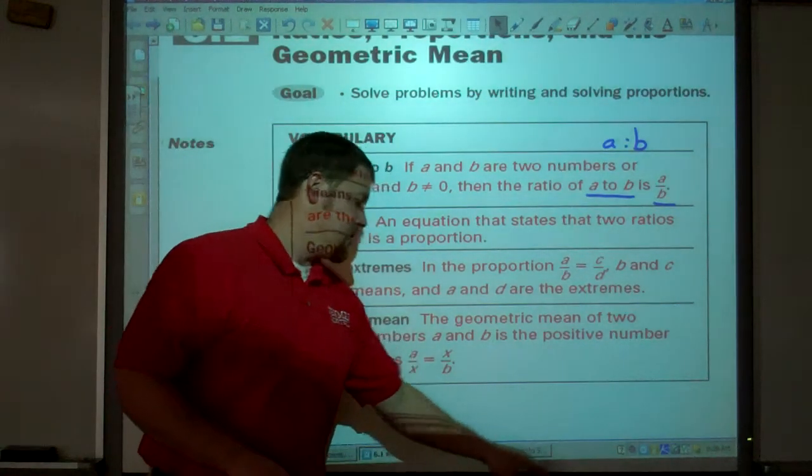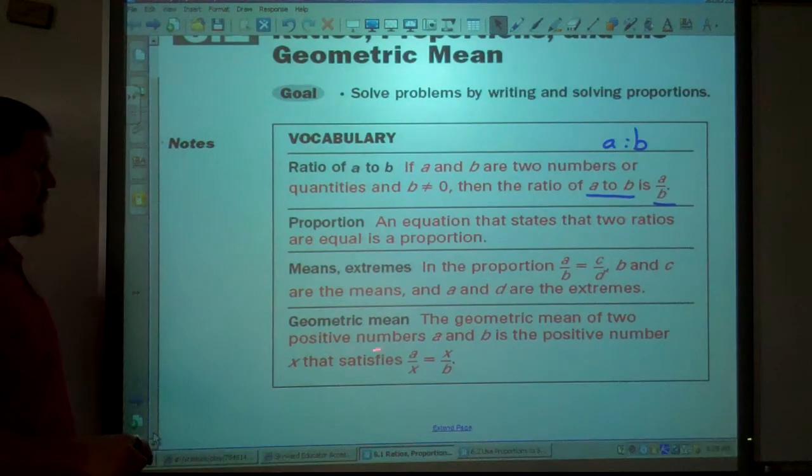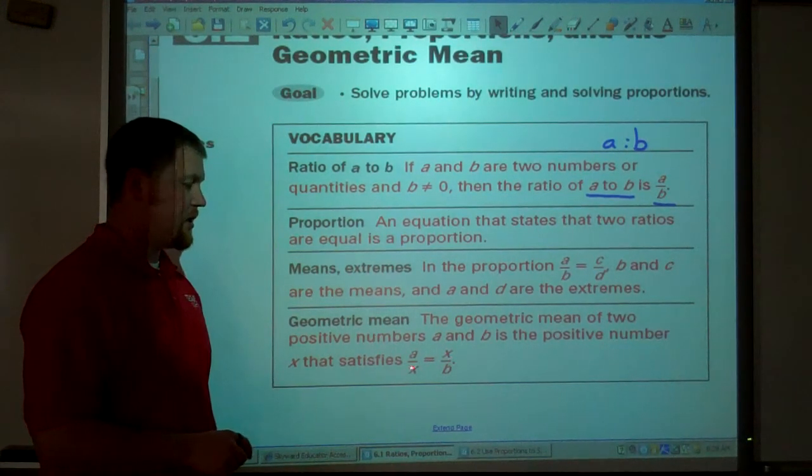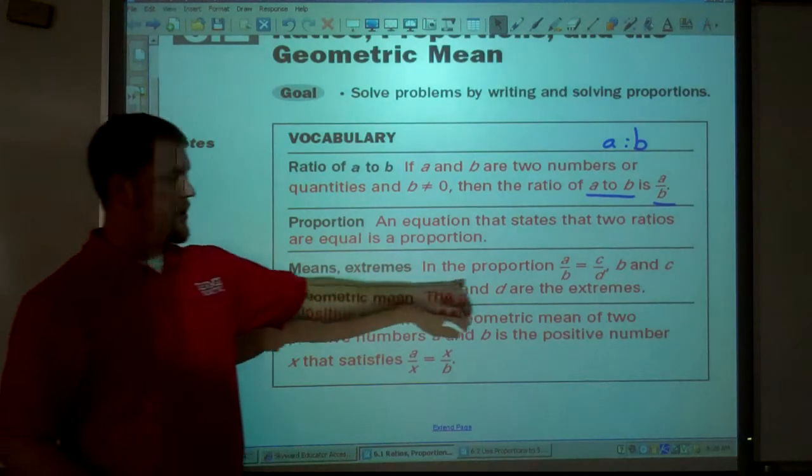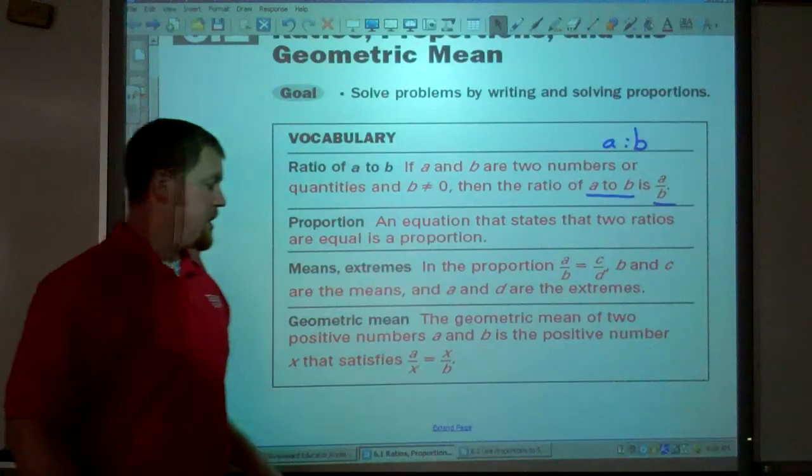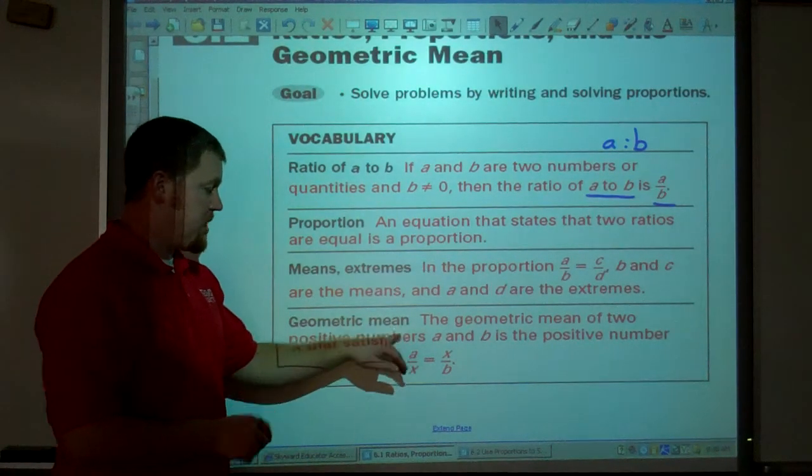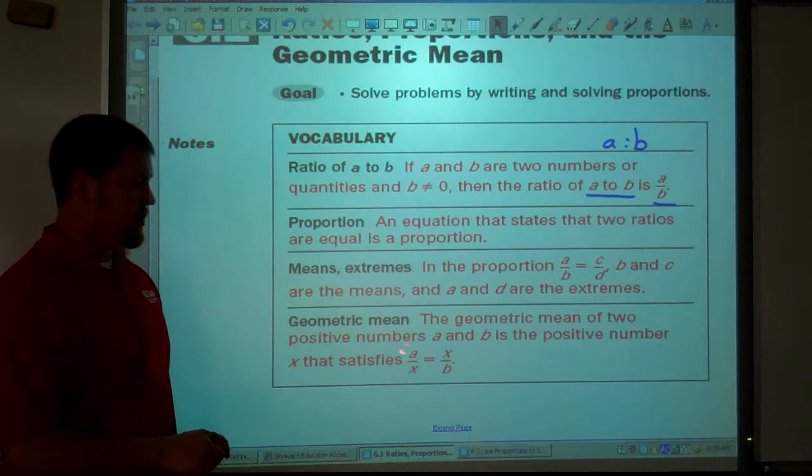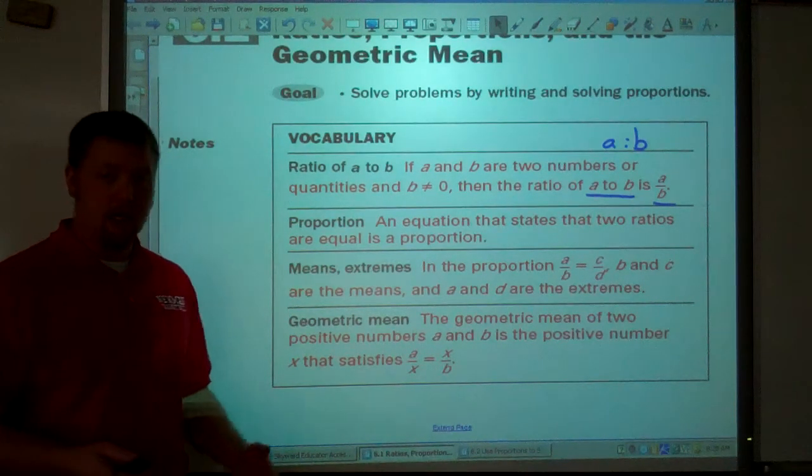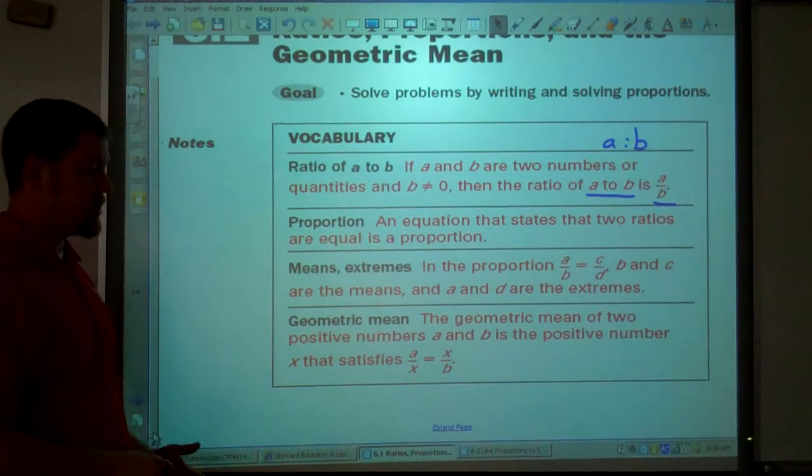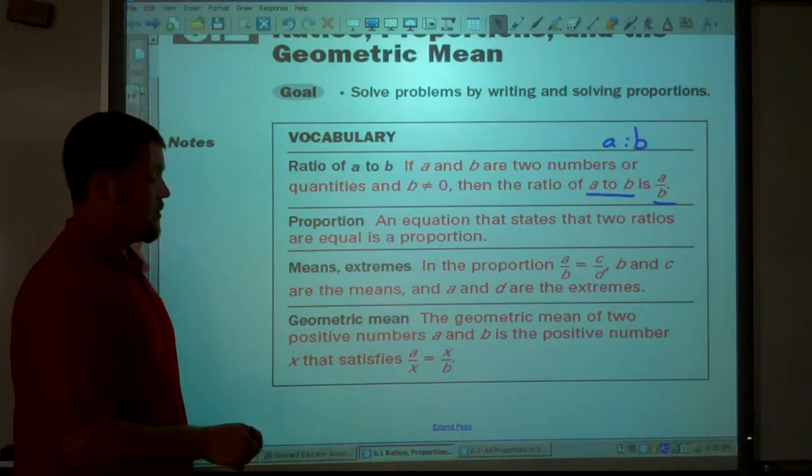Now, the geometric mean. The geometric mean of two positive numbers, A and B, is the positive number X that satisfies here. We just got done talking about means and extremes in our proportion. The means are B and C. We're trying to find the geometric mean. So the X's are there. We're finding out two numbers, A and B. A and B can be any numbers. They represent some geometric figures. Lengths, angle measures, so on and so forth.